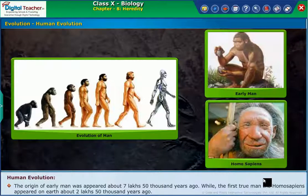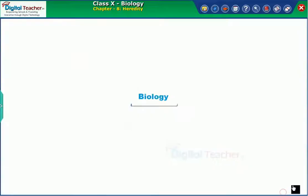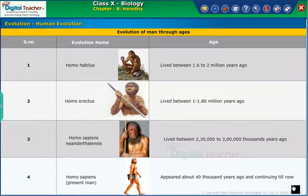Now let us observe the evolution of man through ages. The flowchart on the screen gives information about the evolution of man. The table on the screen gives the evolution of man through ages.